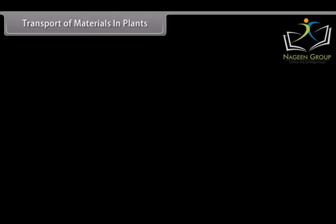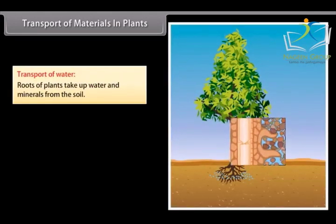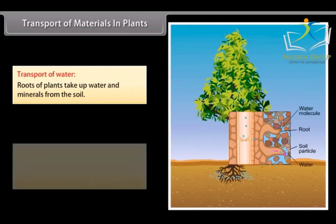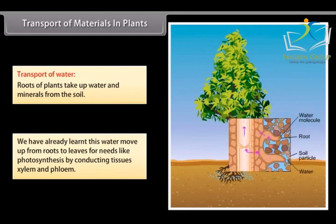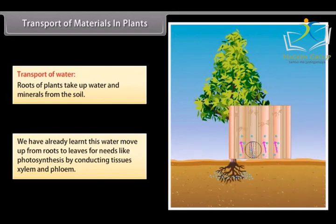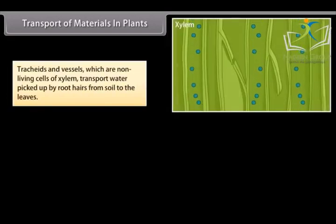Transport of materials in plants: Roots of plants take up water and minerals from the soil. Water moves up from roots to leaves for needs like photosynthesis by conducting tissues, xylem and phloem. Tracheids and vessels, which are non-living cells of xylem, transport water picked up by root hairs from soil to the leaves.